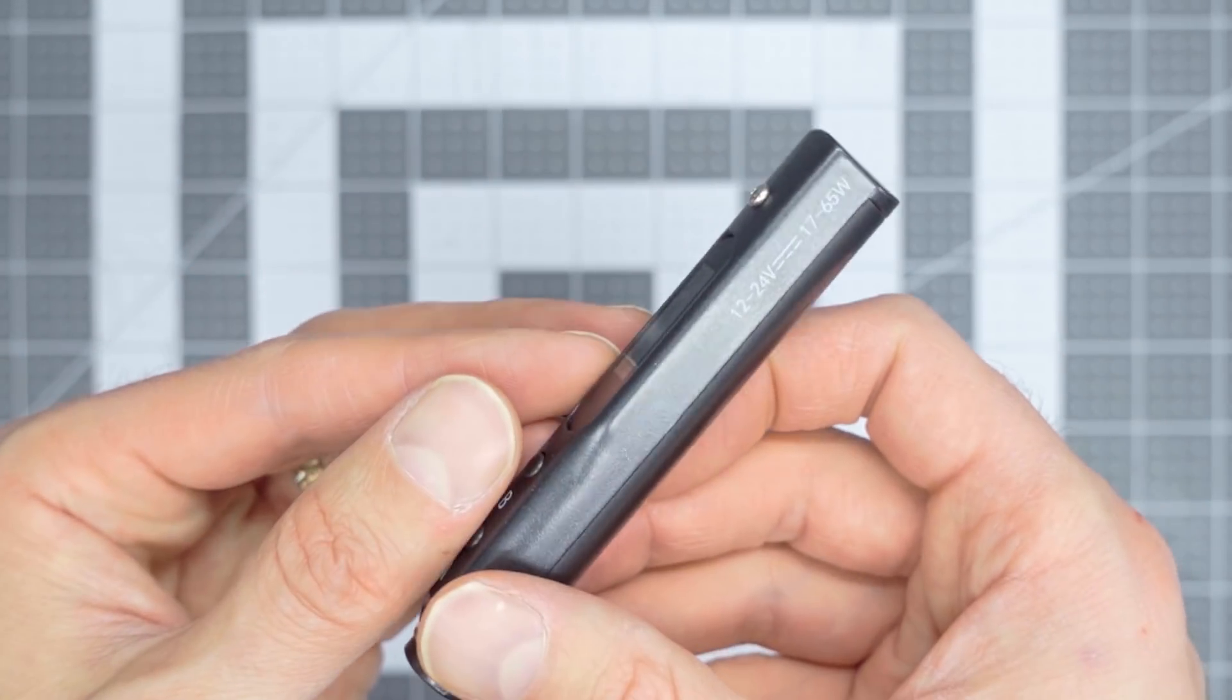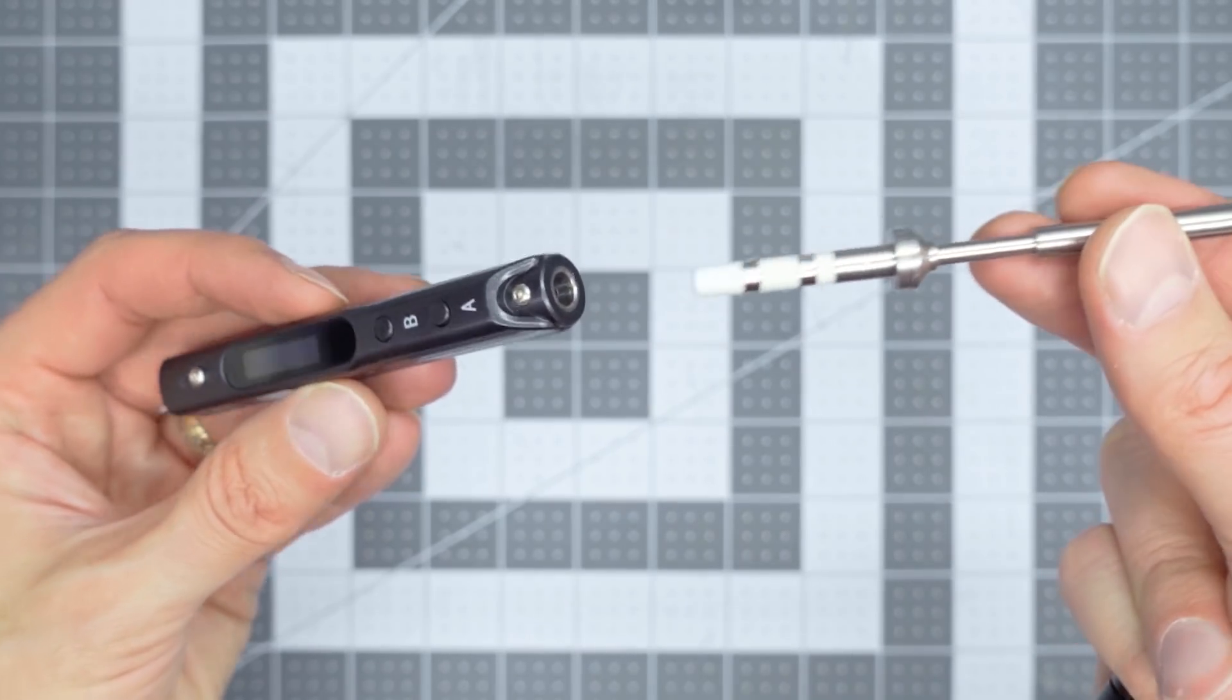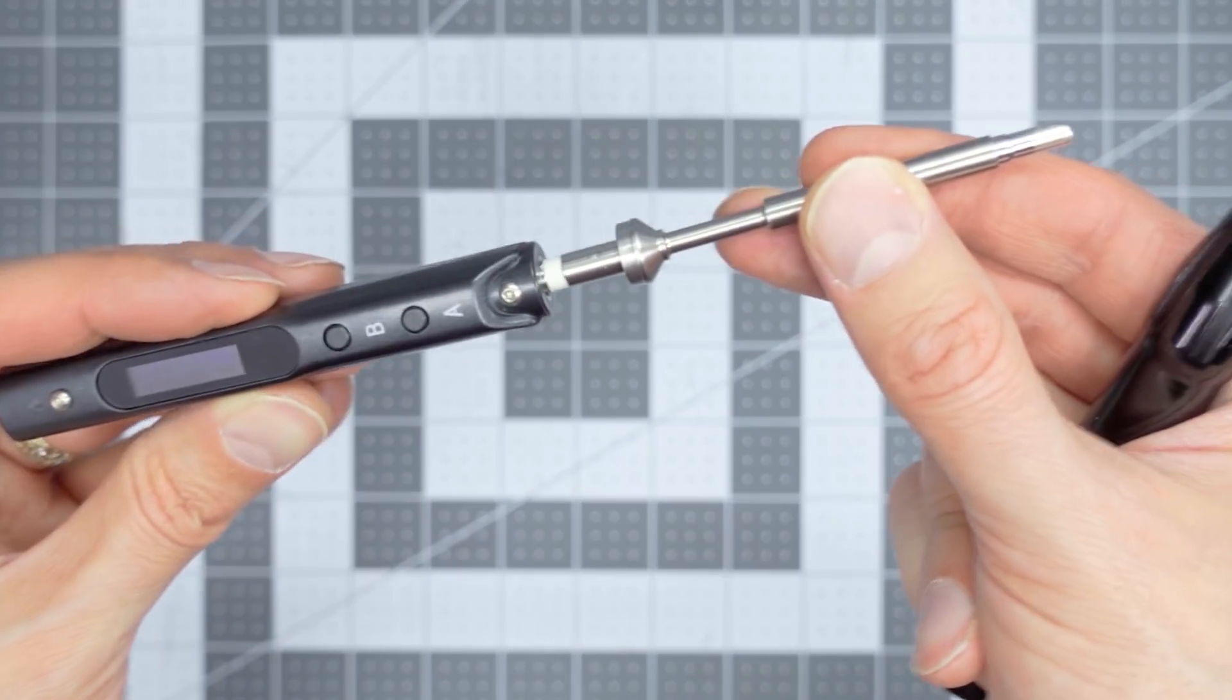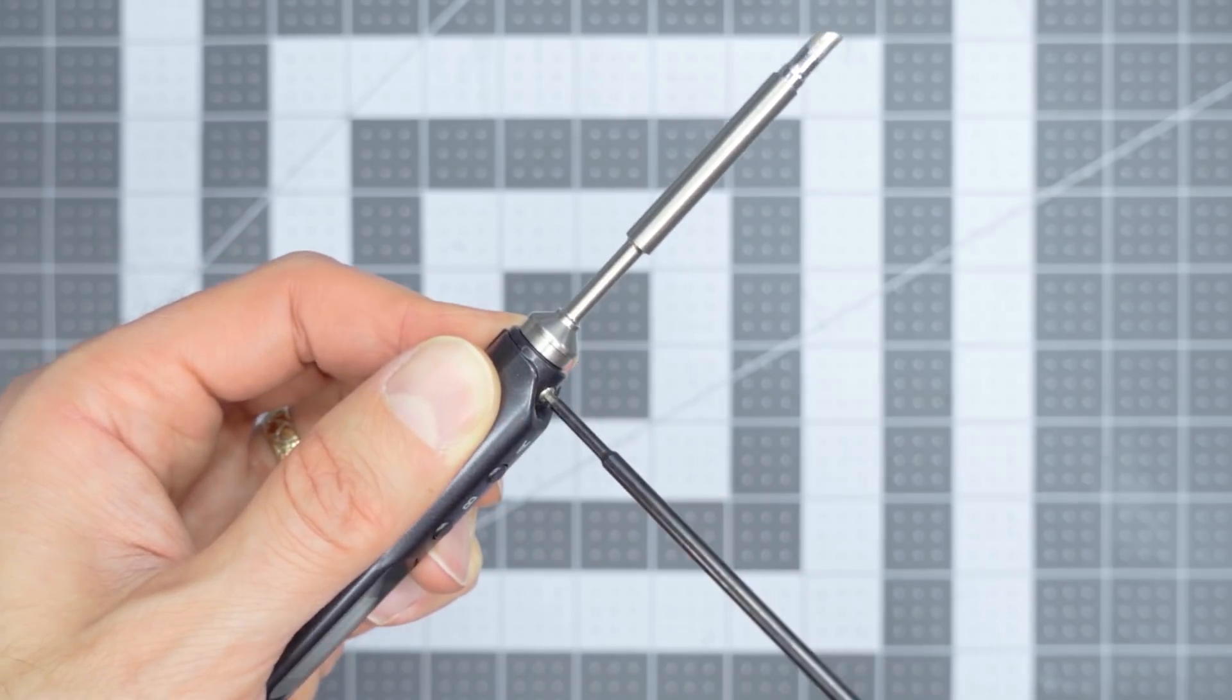To assemble it, you insert the hot end into the end here and set your set screw, locking everything in place, and you're ready to go.